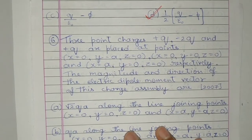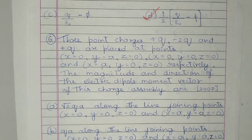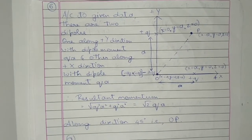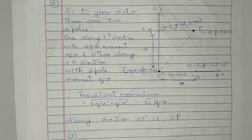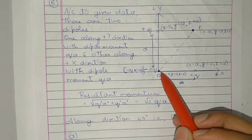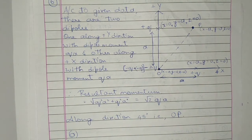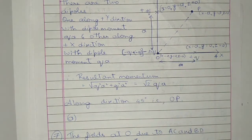Question 6: Three point charges +Q, −2Q, and +Q are placed at points (0, a, 0), (0, 0, 0), and (a, 0, 0) respectively. The magnitude and direction of the electric dipole moment vector of this charge assembly — as given, the charges are placed at respective points such as y = a, at origin, and x = a. We can split this into two dipoles, one along the y direction and one along the x direction, and the dipole moments are Q times a. The resultant dipole is √2 QA at 45 degrees from OP. Therefore it is option A.